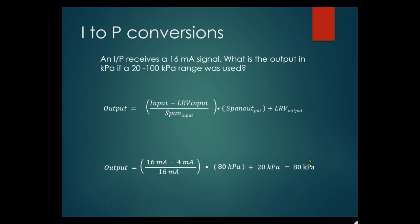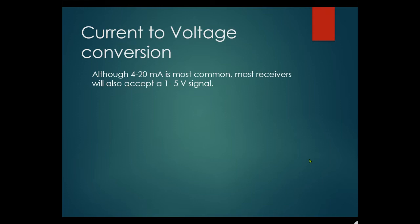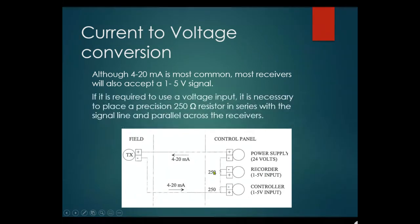Current-to-voltage conversion: although 4 to 20 milliamp is most common, most receivers accept a 1 to 5 volt signal. In a self-powered two-wire 4 to 20 milliamp loop, a 250 ohm resistor is placed in parallel with each device — a controller and a recorder. At 4mA the device has 1 volt input; at 20mA it has 5 volts. If a voltage input is required, it's necessary to place a precision 250 ohm resistor in series.